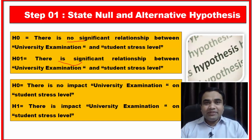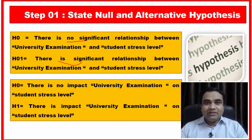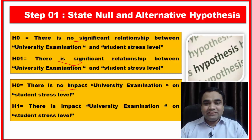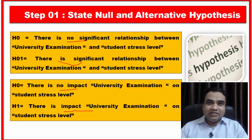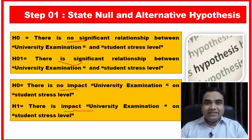You can also define the null hypothesis and alternative hypothesis in a different way. For example, null hypothesis: there is no impact of university examinations on the stress level of students. Alternative hypothesis: there is an impact of university examinations on the stress level of students.